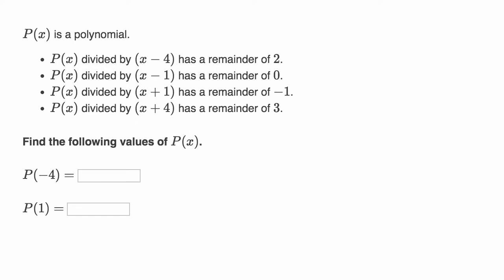P(x) is a polynomial, and they tell us what P(x) divided by various things are, what the remainder would be when you divide P(x) by these various expressions. Find the following values of P(x): P of negative four and P of one. Pause this video and see if you can have a go at it.